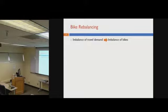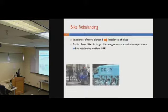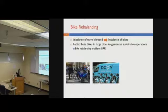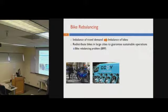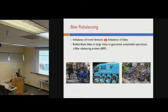Bike sharing systems usually face a very important question. Due to the imbalance of travel demand, the inventory of bikes at different locations usually suffers from either excess or deficit after the system runs for some time. In order to maintain proper system operation, bike rebalancing operations must be implemented. This means vehicles are deployed to various bike sharing locations to pick up bikes from locations with excessive numbers and move them to locations with a deficit.